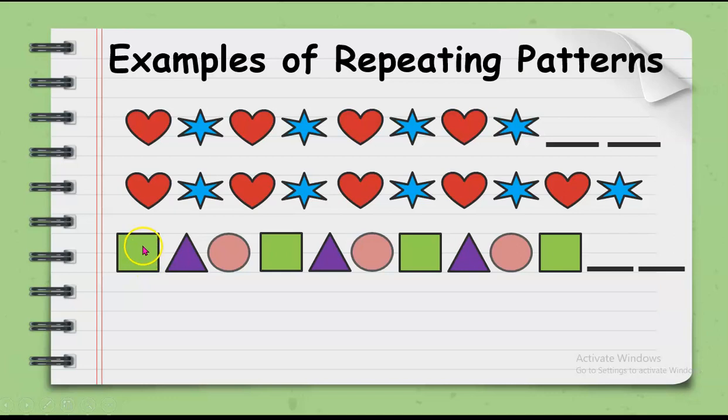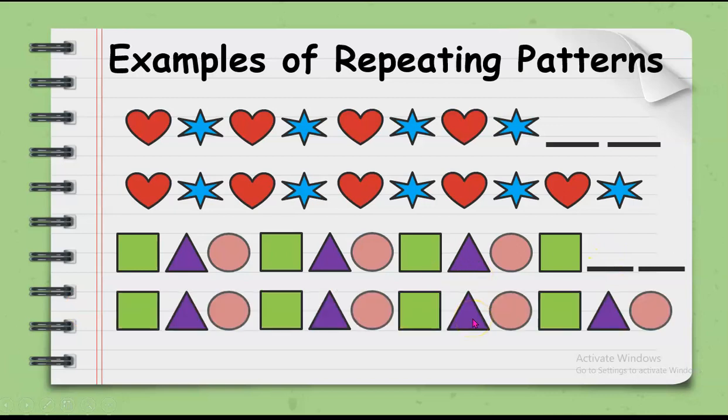We also have here square, triangle, circle. Square, triangle, circle. Square, triangle, circle. Then we also have square. So, what do you think will be the next objects? You're correct. The triangle and the circle.